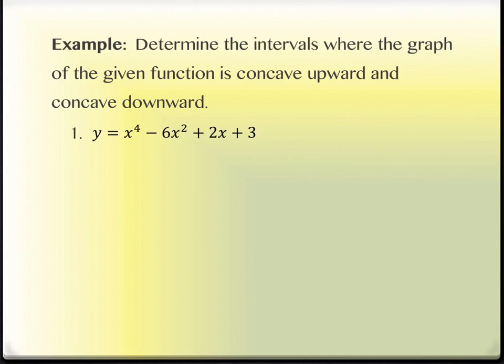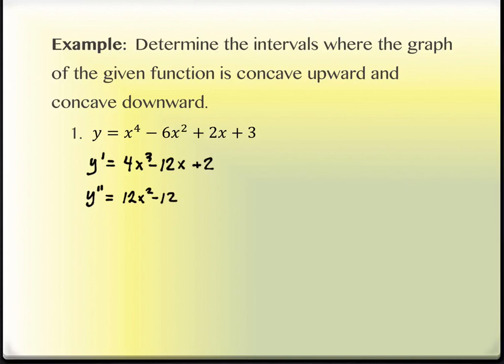It wants us to determine where the graph is concave up and concave down. With the exception of the fact that I'm going to take the second derivative, everything else is going to look like what we did in the last section. So first derivative: 4x cubed minus 12x plus 2. The second derivative is even friendlier when working with polynomials. The second derivative here is 12x squared minus 12. We set the second derivative equal to zero and solve. Then we set up a sign chart and test intervals — all the same.